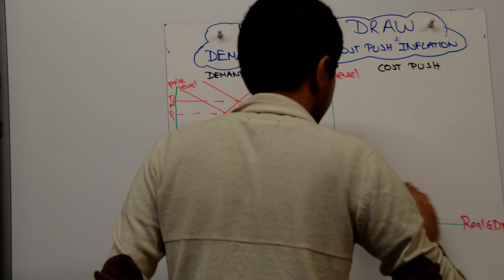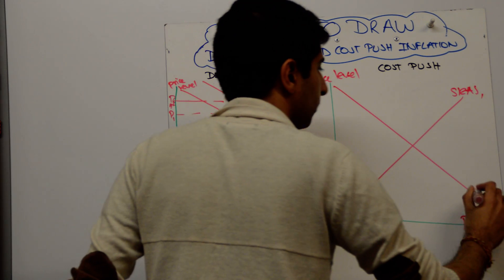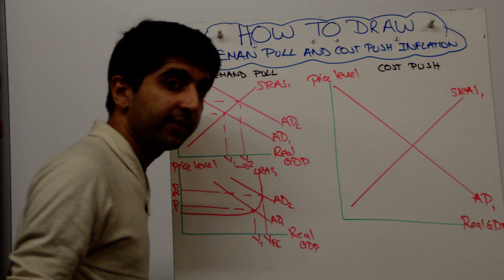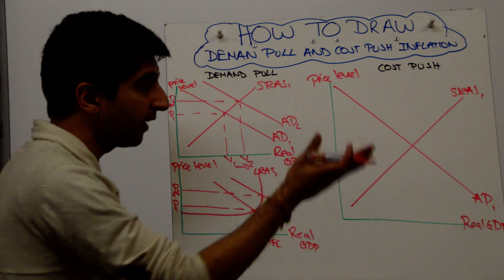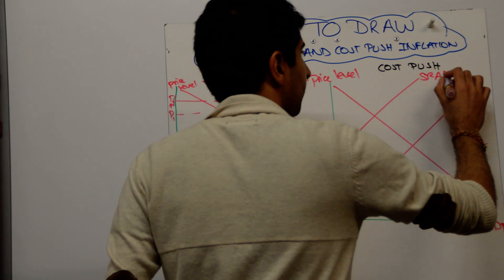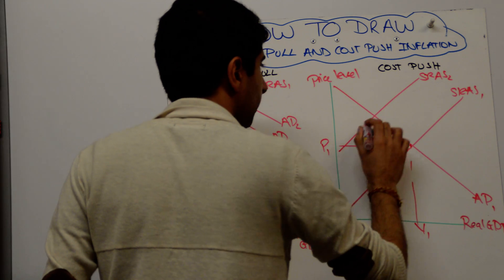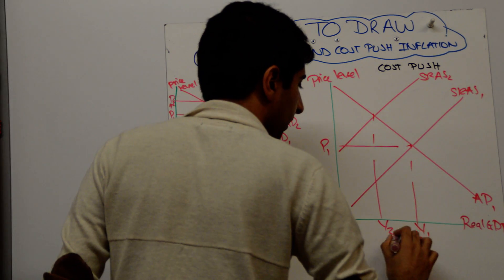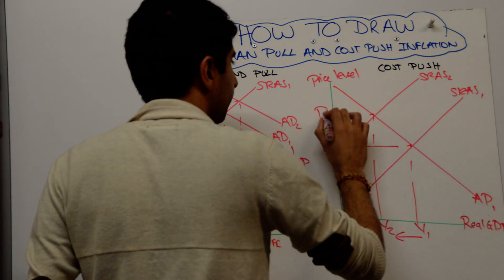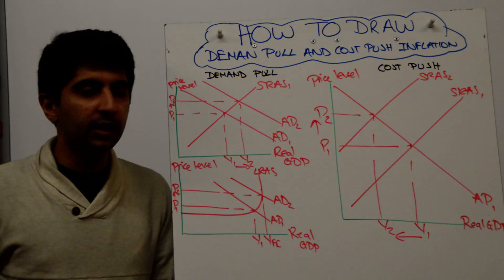on the X-axis. There's your initial SRAS, there's your initial aggregate demand. Simple diagram like that will suffice, and shift SRAS to the left. Now there is that shift. Do your labeling. So initial equilibrium is at Y1 and P1. New equilibrium - they've got lower growth and most importantly your cost-push inflationary pressure from P1 to P2.